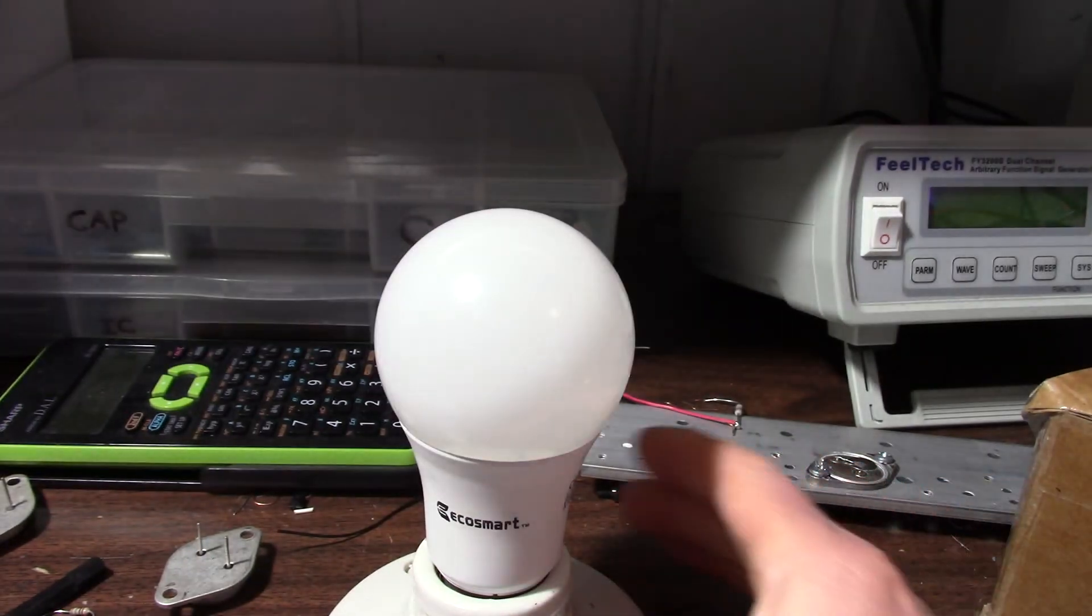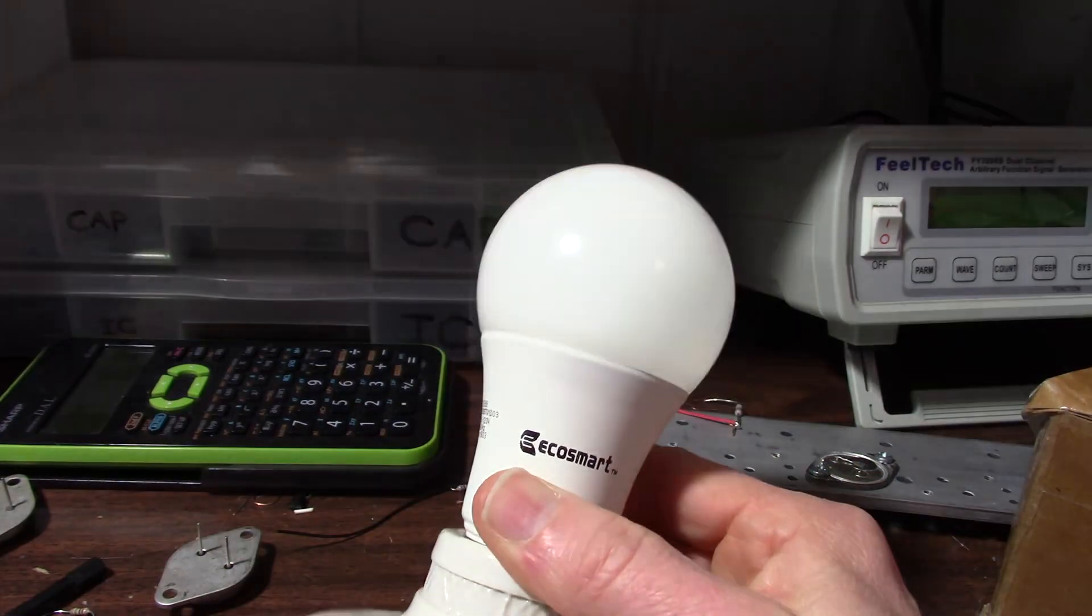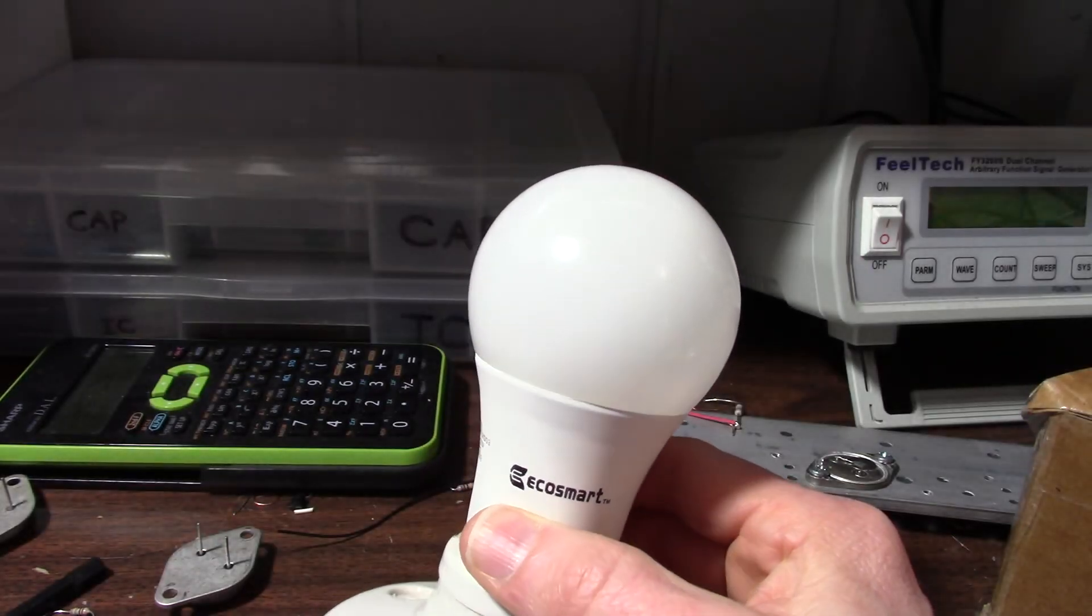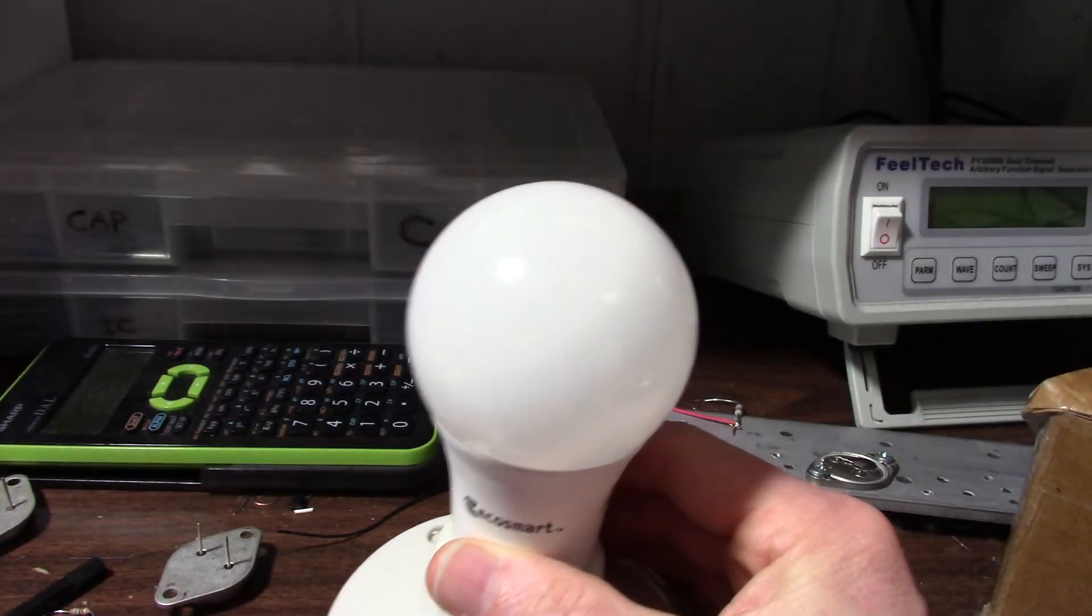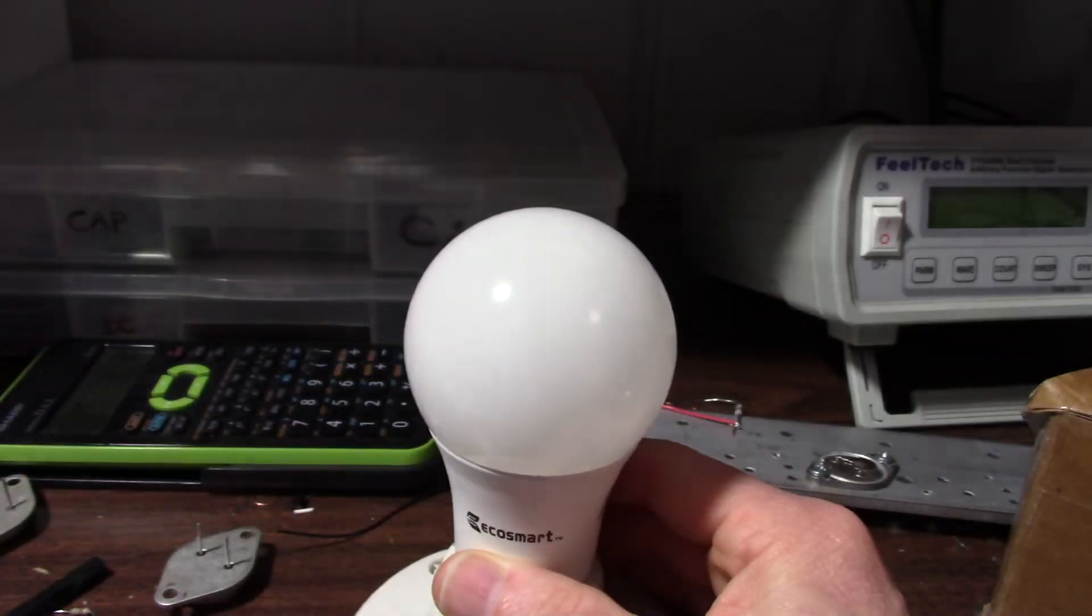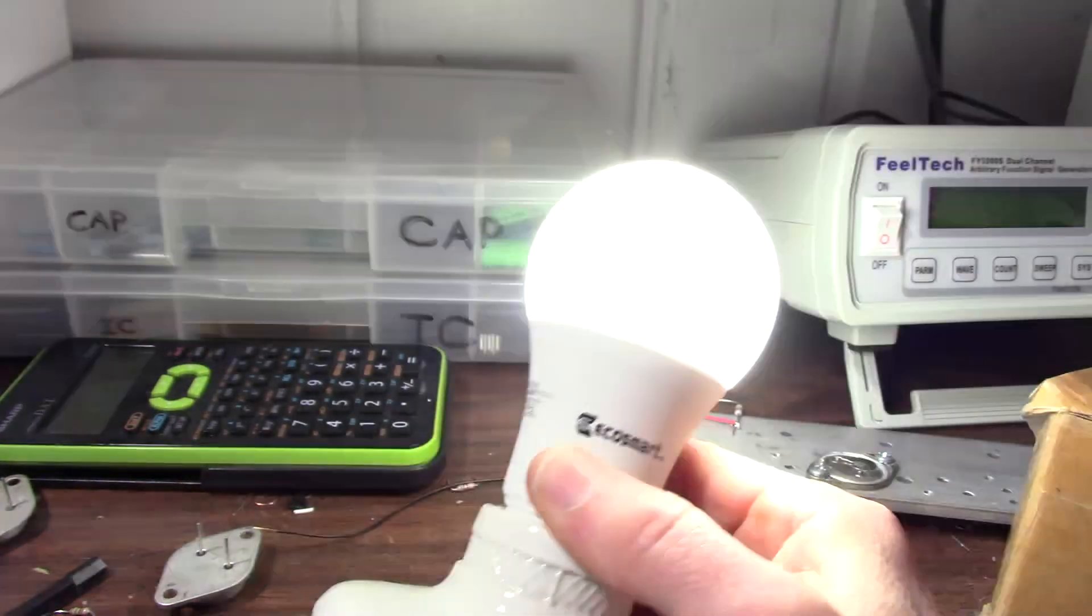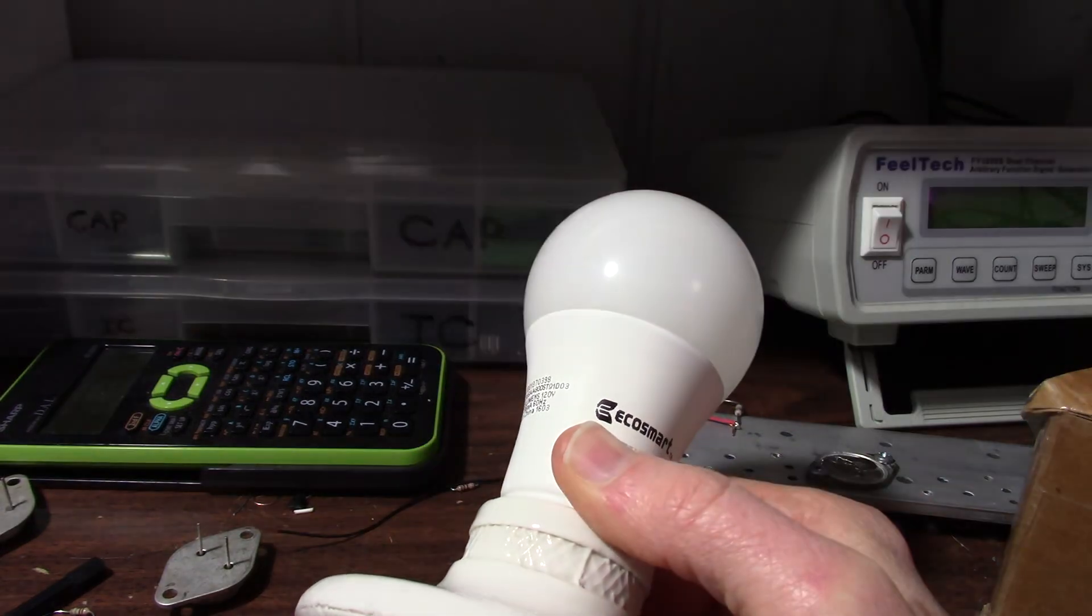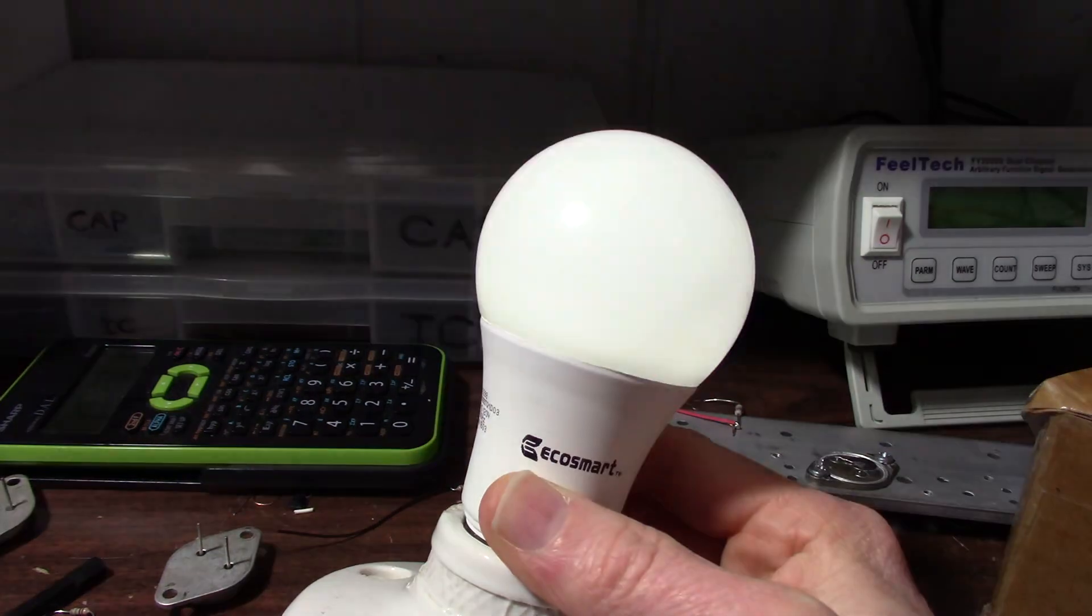So this bulb came from my parents house. My dad asked me to change it, said it was starting to flicker. So I changed it out from the ceiling fixture and brought it home here. Yeah, this is kind of an odd failure mode. I've never seen one do this before.